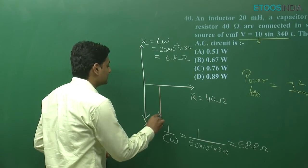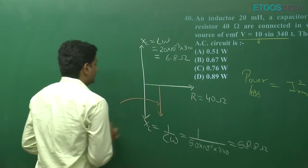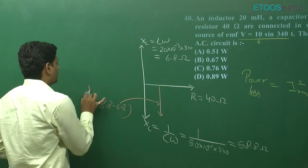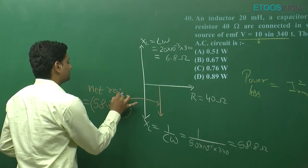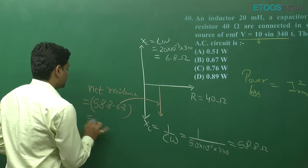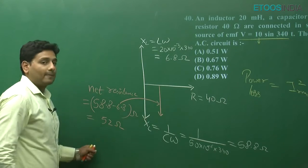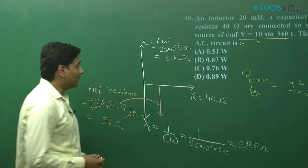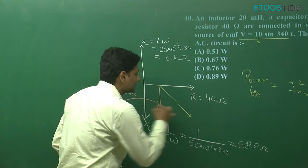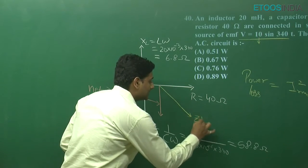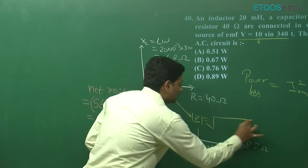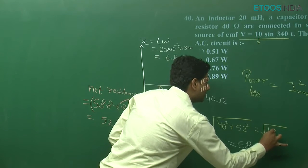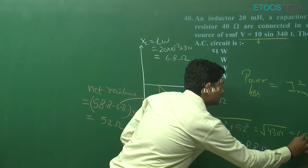Now moving ahead, if we need to find the net resistance, this will be the net resistance. Its value should obviously be 58.8 minus 6.8. This is the net resistance, and this comes out as 52 ohm. Now we have the net resistance. If we look at the impedance, it will be represented as Z — so impedance = √(40² + 52²), which comes out as √4304, approximately 65 ohm.